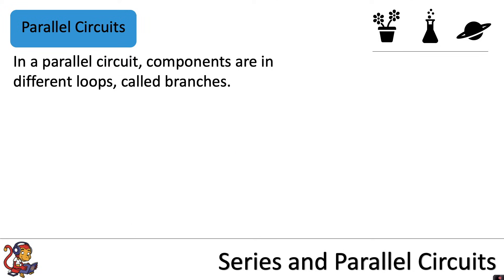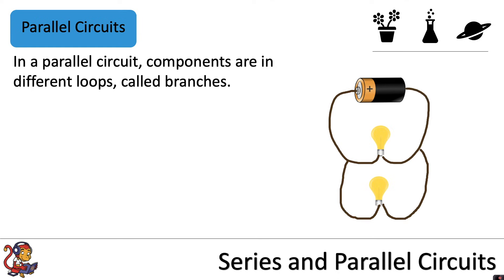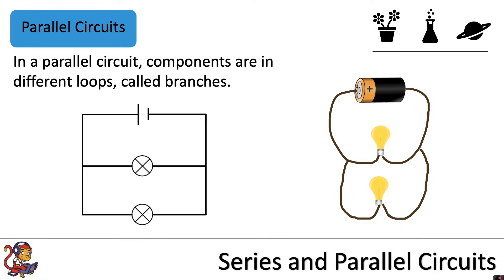In a parallel circuit, components are in different loops which we call branches. When adding a second lamp, rather than putting it in the same loop, we add a second loop of wire and put the component in its own loop. The circuit diagram would look like this, and you can see the parallel lines which lead us to call them parallel circuits.